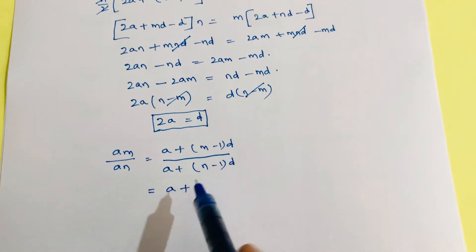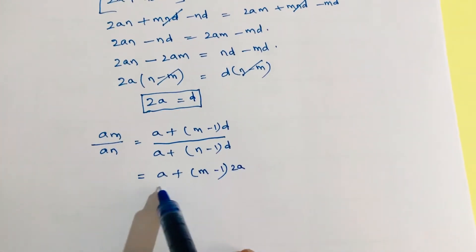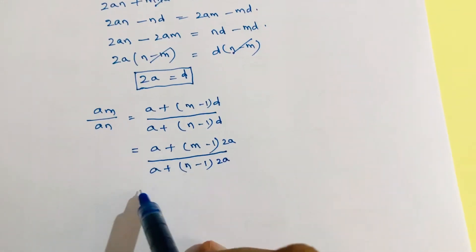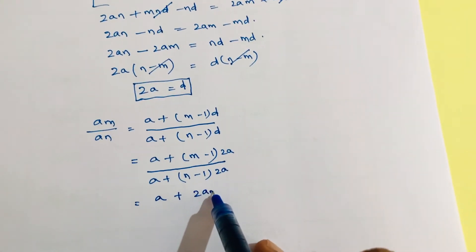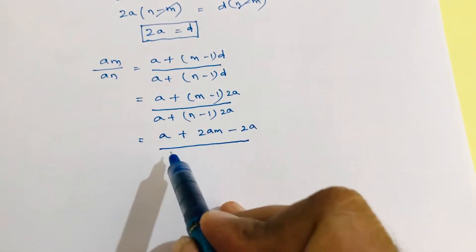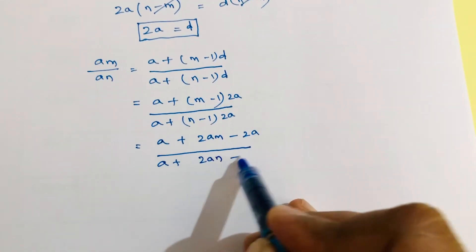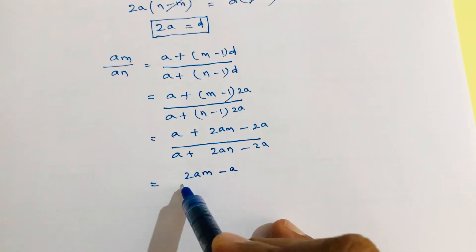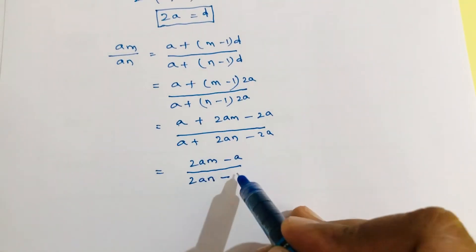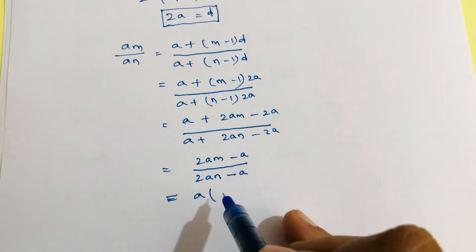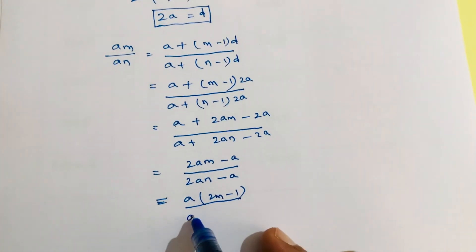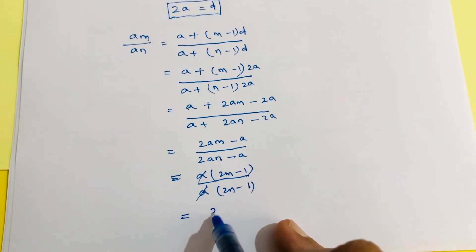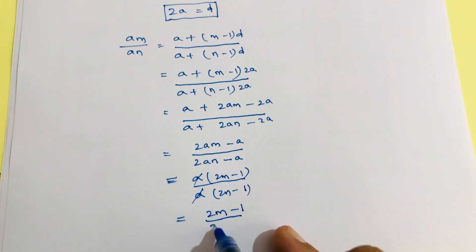Since 2a equals d, substituting: a plus m minus 1 into 2a all over a plus n minus 1 into 2a. Taking a common, this simplifies to 2m minus 1 by 2n minus 1. So the answer is 2m minus 1 by 2n minus 1. Therefore a_m to a_n is 2m minus 1 to 2n minus 1.